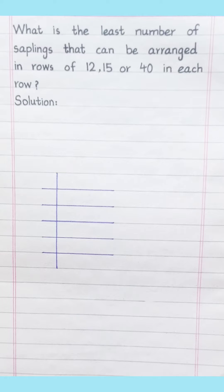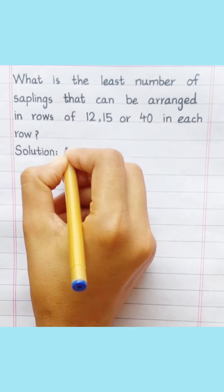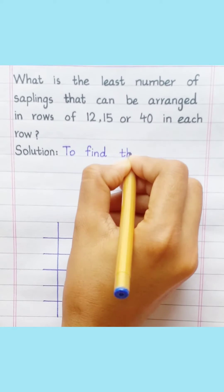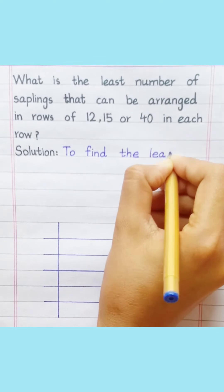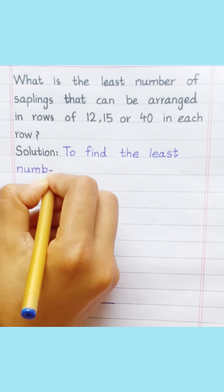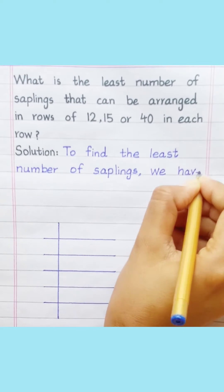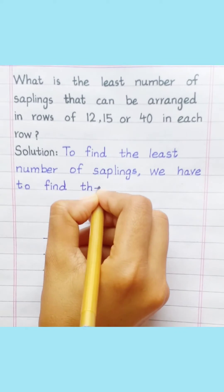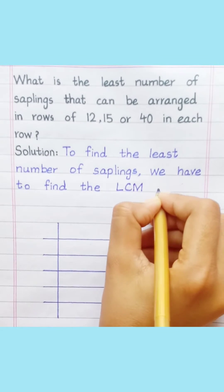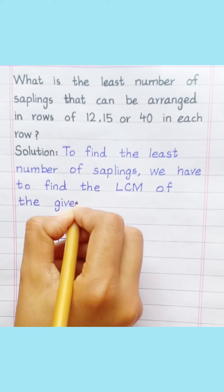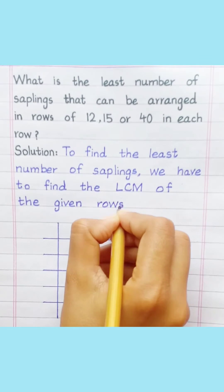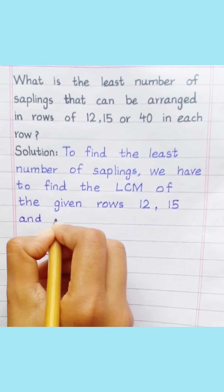What is the least number of saplings that can be arranged in rows of 12, 15, or 40 in each row? Solution: To find the least number of saplings, we need to find the LCM of the given rows 12, 15, and 40.